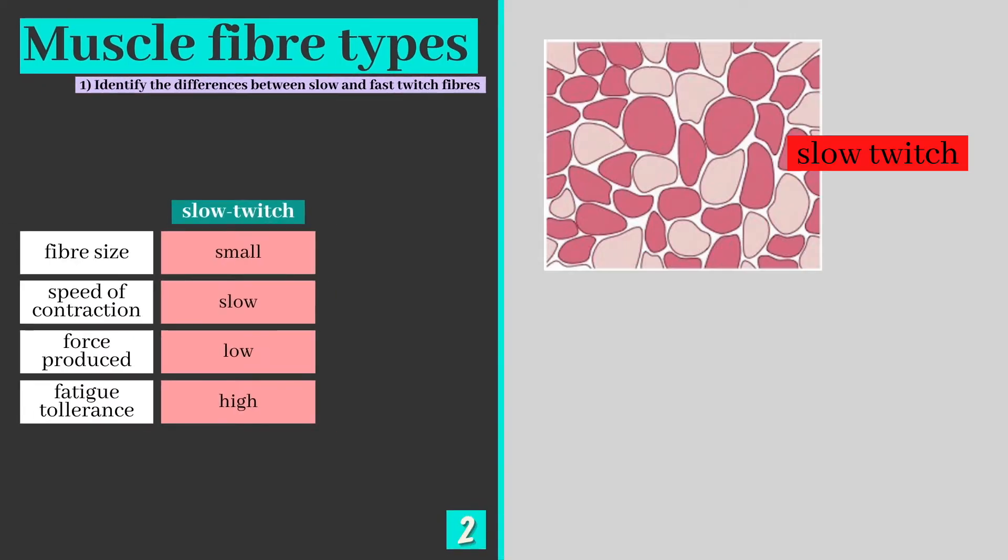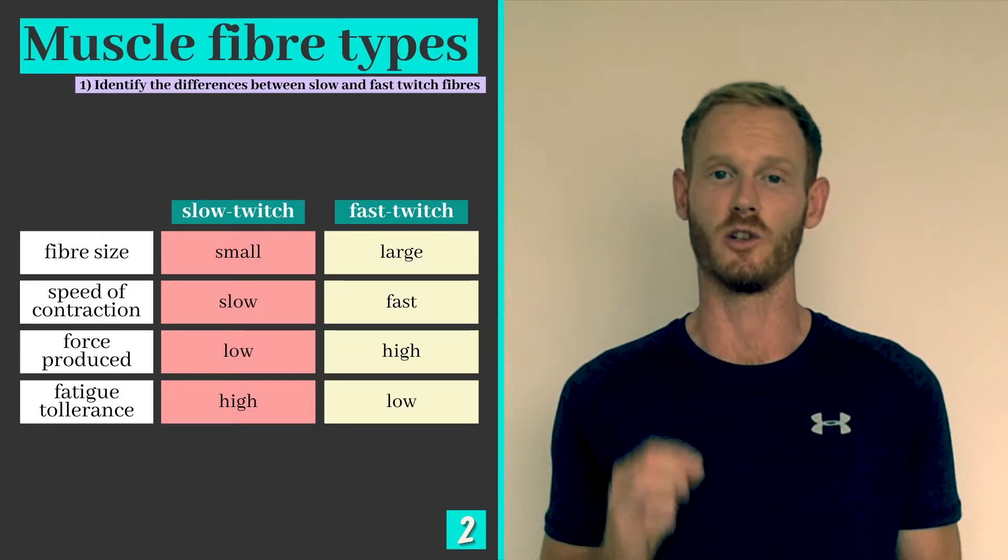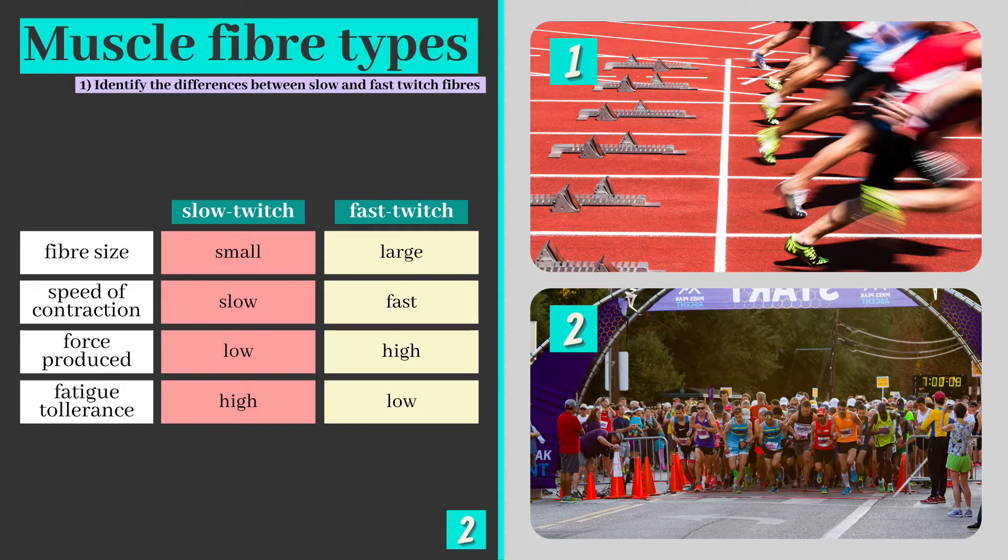Slow twitch muscle fibers are smaller fibers. They contract slowly, produce little force but can continue to work for long periods of time without tiring. Fast twitch muscle fibers on the other hand are much thicker and produce considerably more force. They contract more quickly and powerfully than slow twitch fibers but are lower in endurance and tire rapidly. Given this information, which type of muscle fiber do you think is being used in each of these scenarios?